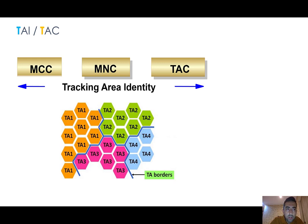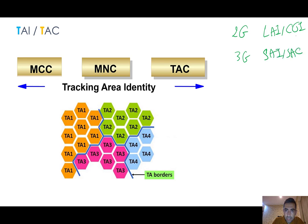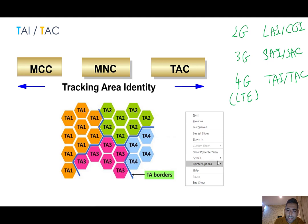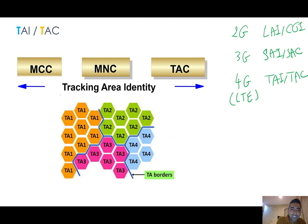As we saw, for 2G we had LAI and CGI. For 3G we had SAI and SAC. And for 4G LTE,